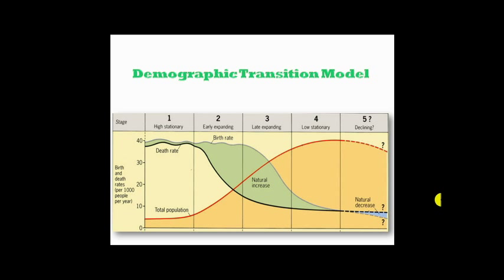The limitations of the demographic transition model include: it does not account for the influences of migration; it assumes all countries will go through the same pattern; it does not explain population momentum; there is no time scale; it is not applicable to less developed countries due to lack of quality data; it ignores HIV infection; and it ignores social change compared to economic and industrial change. The model was developed based on the experiences of Western European and North American countries, so conditions may differ in other parts of the world, and the reasons for birth and death rates vary greatly by country, meaning it cannot be adopted universally. Nevertheless, it is a very good model for understanding where a country stands socially, economically, and industrially.